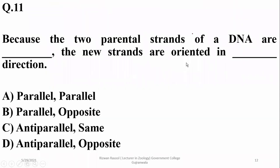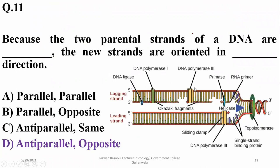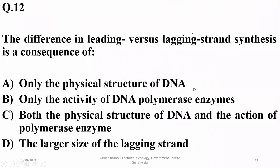Number 11: because the two parental strands of DNA are anti-parallel, the new strands are oriented in opposite directions — so delta. The difference in leading versus lagging strand synthesis is a consequence of both the physical structure of DNA and the action of the polymerase enzyme, which is responsible for their different types of synthesis.